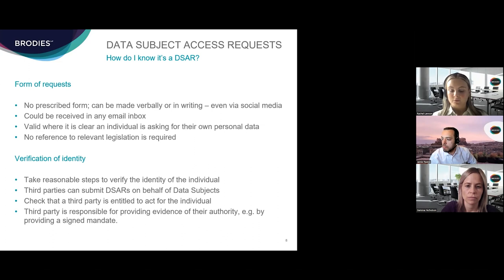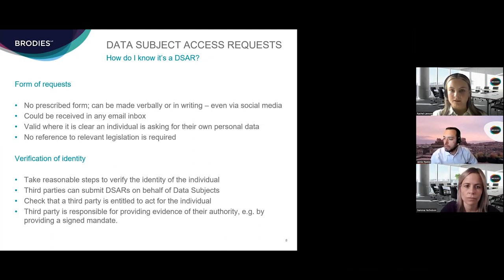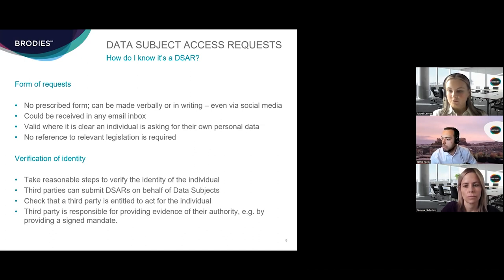Consider whether the request is accompanied by evidence of the solicitor's authority to act, for example through a signed mandate. Requests from regulated solicitors may require less additional verification than, say, a husband purporting to make a request on behalf of his wife. If you think further identity checks are necessary, the time period for responding does pause. The ICO asks that you don't make unnecessary requests — if a requester is within your own organisation and requests via their corporate email, fewer checks are needed than when a request comes from a third party.